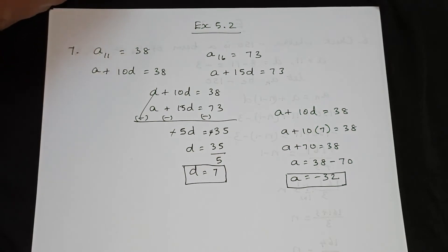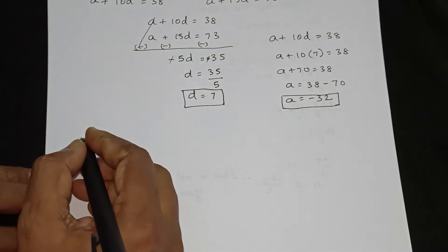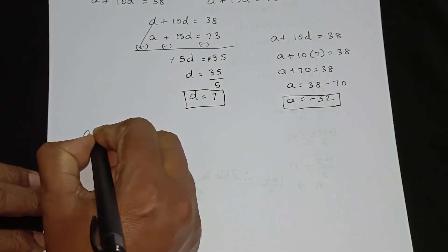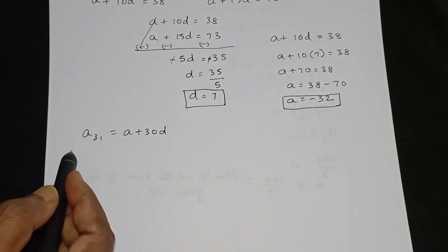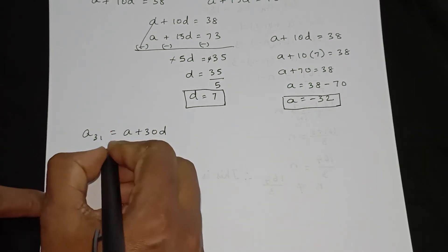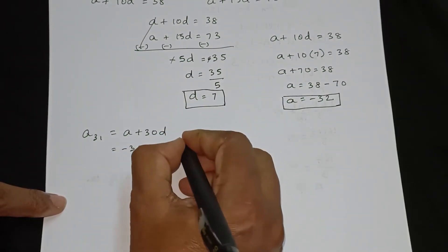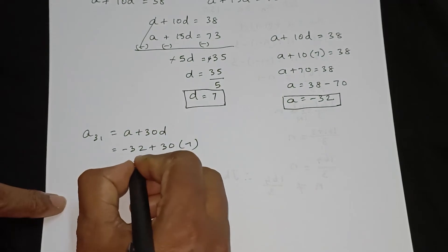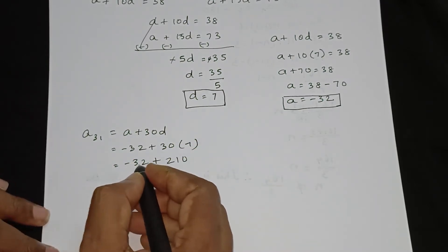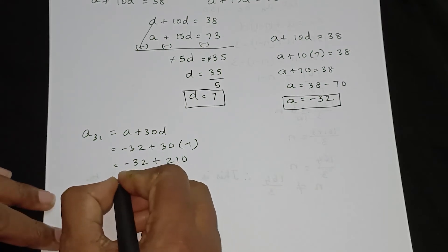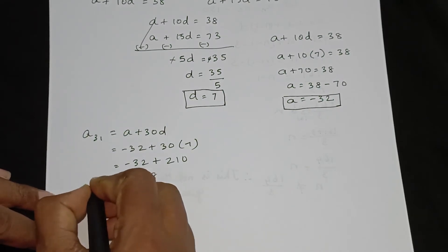The first term a is equal to minus 32. Now to find the 31st term: a plus 30d is equal to minus 32 plus 30 into 7. So a31 is equal to 178.